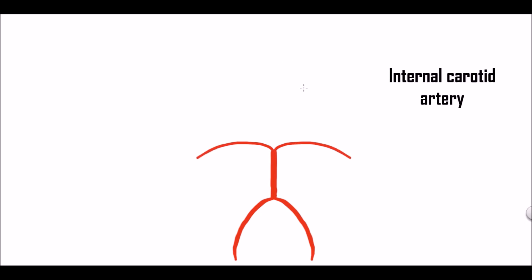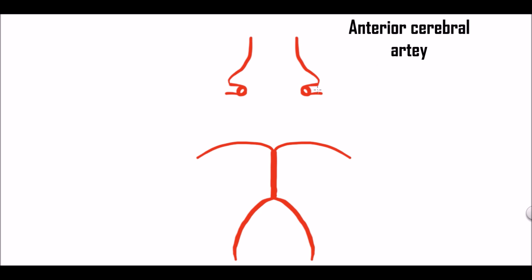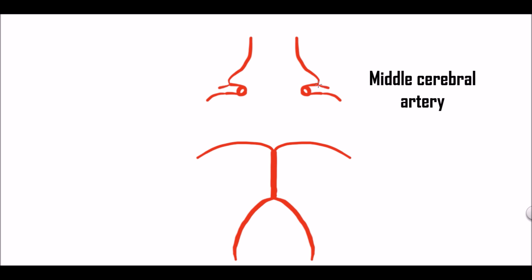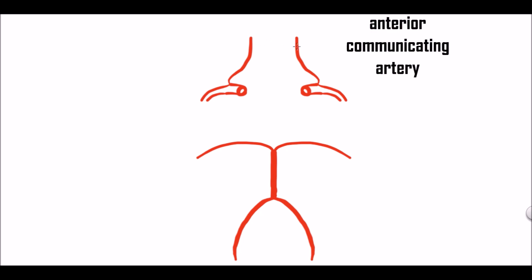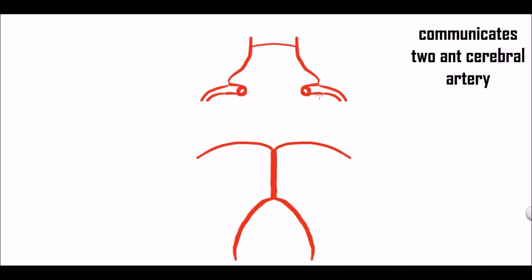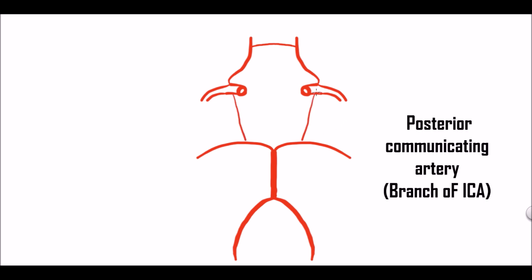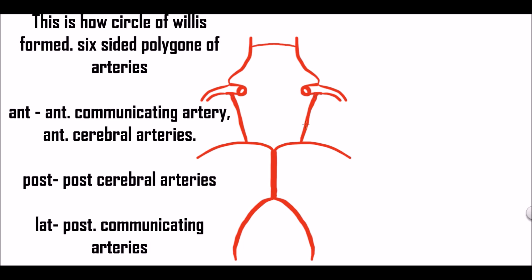Now here we can see the internal carotid artery and it divides into two branches. It terminates as one branch which is the anterior cerebral artery. So this one is the anterior cerebral artery. Another larger branch, or its continuation, is the middle cerebral artery. So this is the middle cerebral artery. Now we can see the anterior communicating artery communicates the anterior cerebral arteries, and the posterior communicating artery communicates the internal carotid artery with the posterior cerebral artery. This is how the hexagonal Circle of Willis forms.